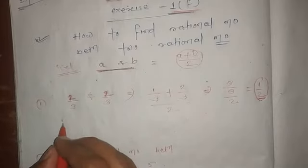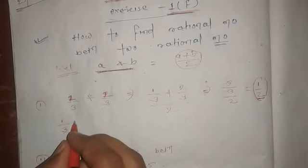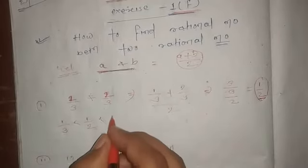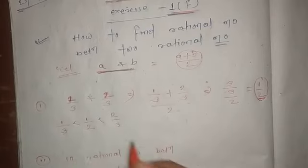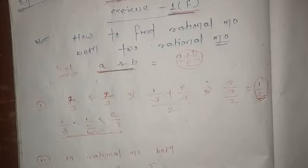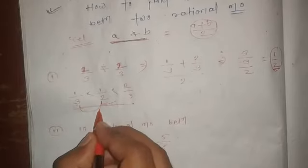We can write 1 upon 3, and this 1 upon 2 is greater than 1 upon 3. And the last digit, 2 upon 3, is greater than this. So this is one rational number we found between them. In this way, we can find many rational numbers.